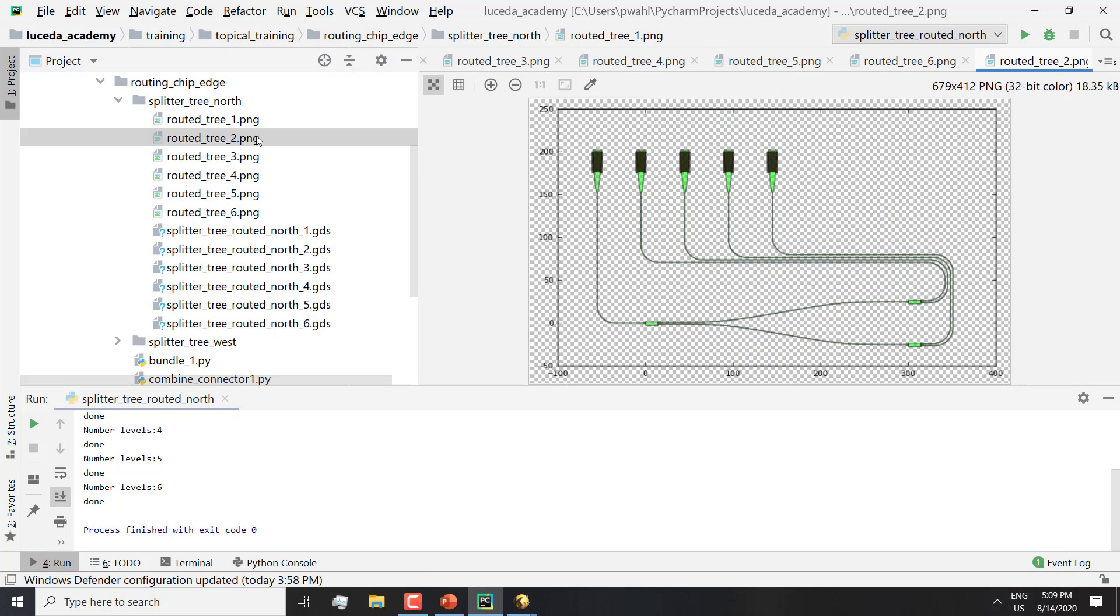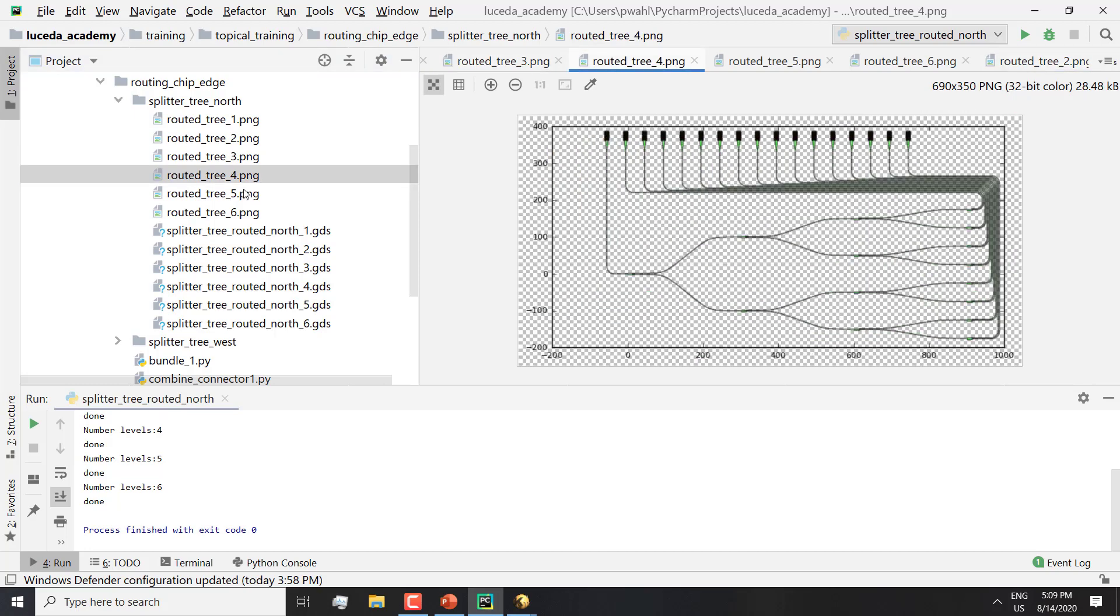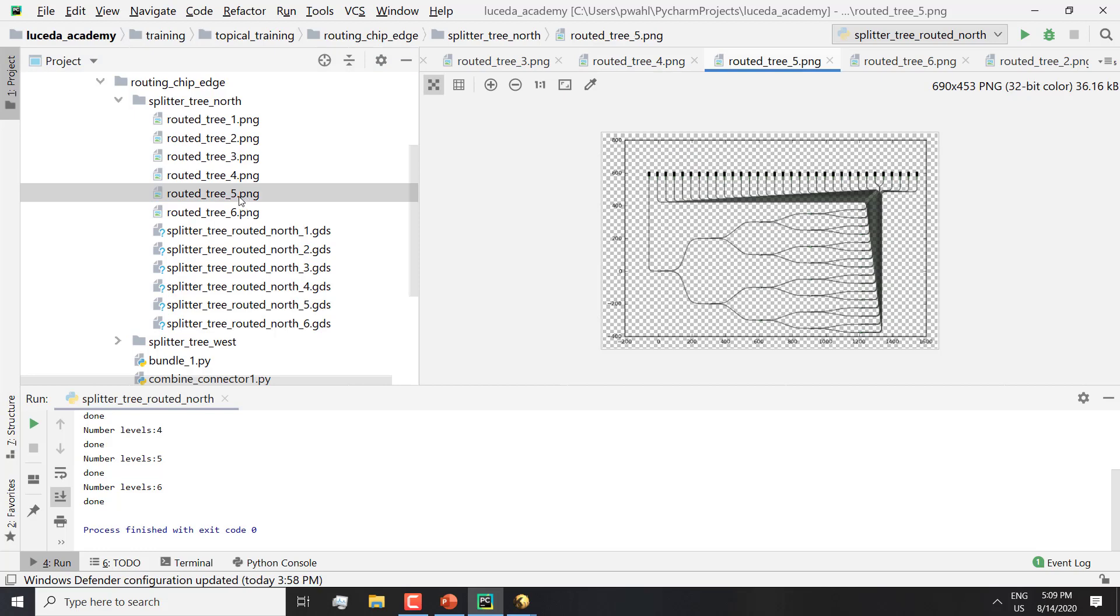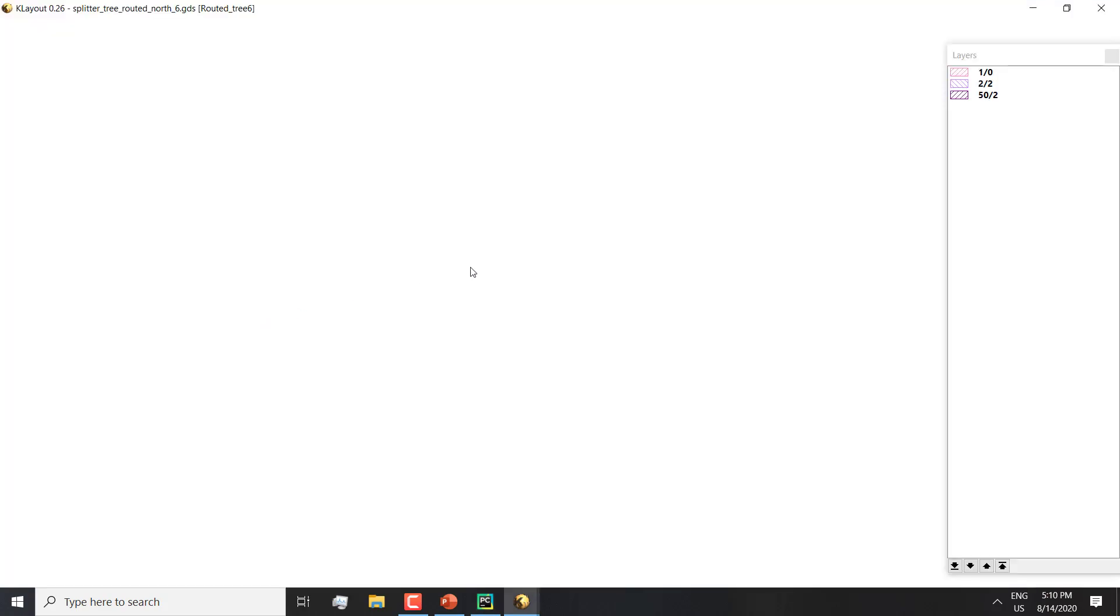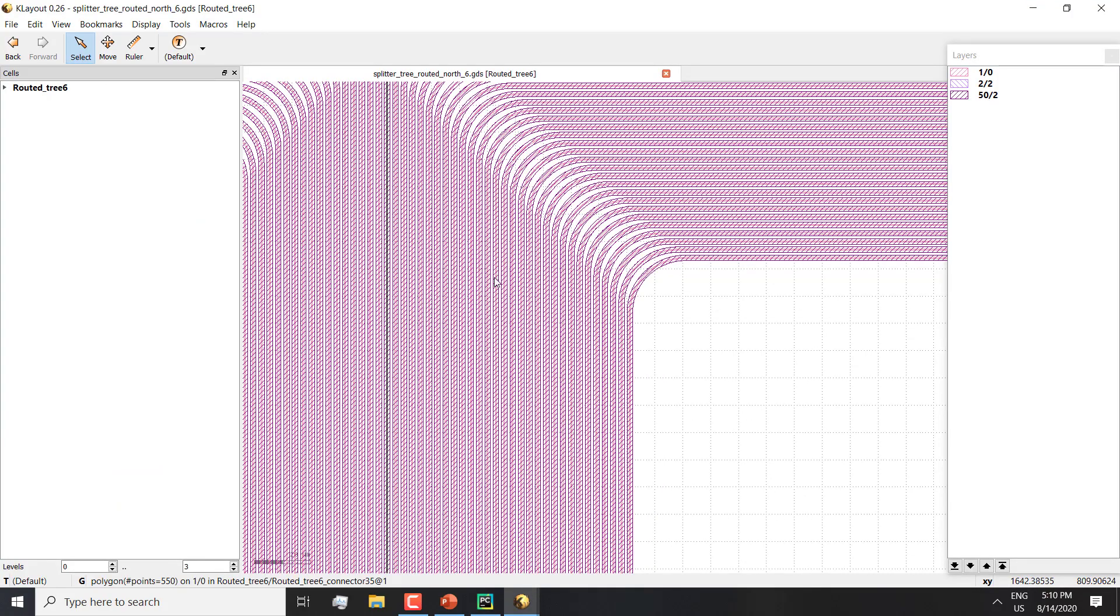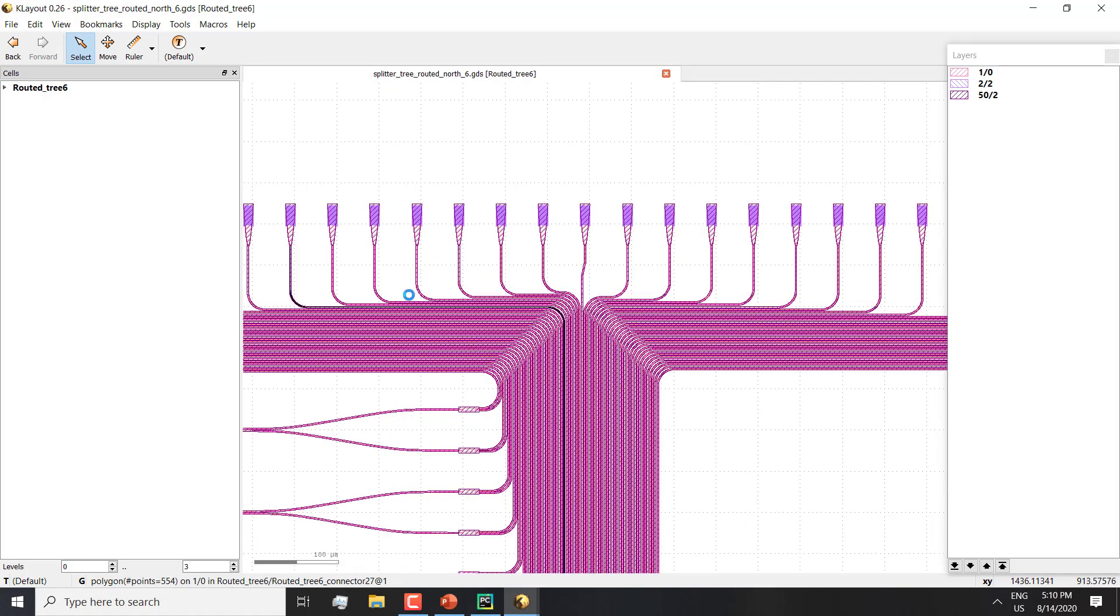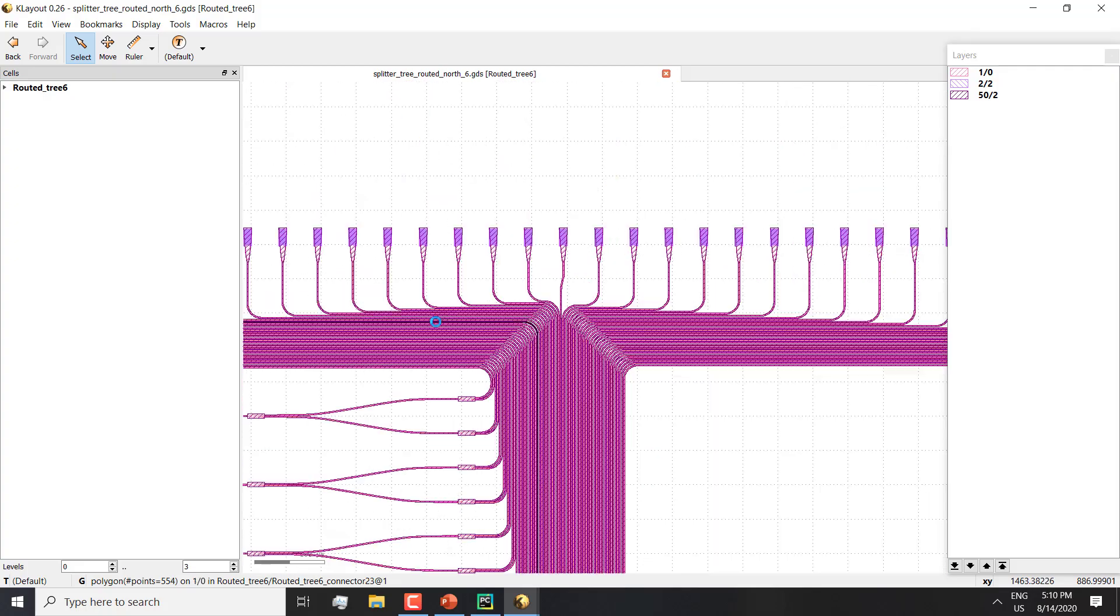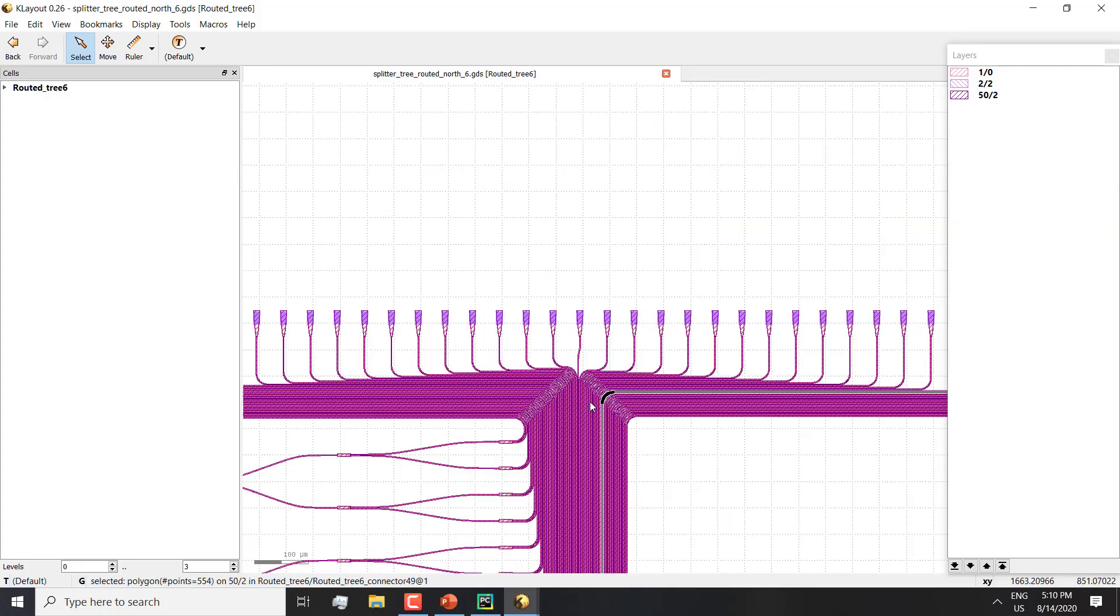Here again we can see the result. The spacing indeed has increased, and the routing heuristic has been re-applied successfully. When we open the GDSs, we see that the routing is indeed providing a very tight packed waveguide bundle with spacings that are now three micron instead of five, and also the bend radii have been adapted.